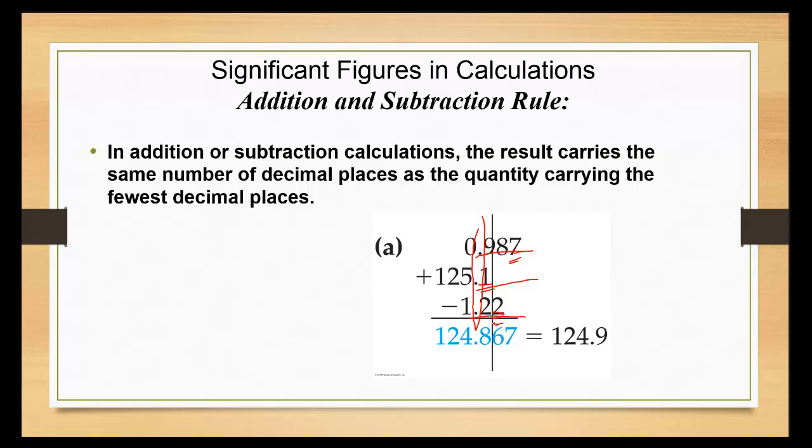I'm going to draw a line right after it, and that tells me that I'm going to round it off at the eight. The next number is six, so I'm going to round it up to nine. So 124.9.